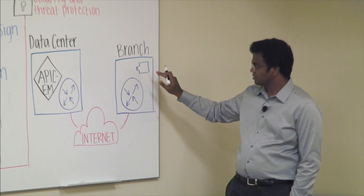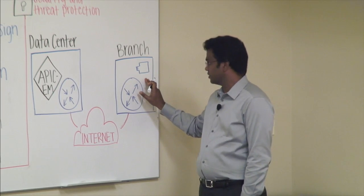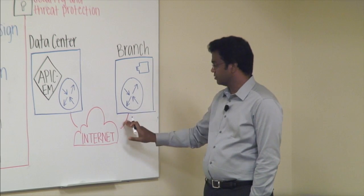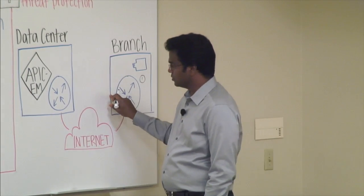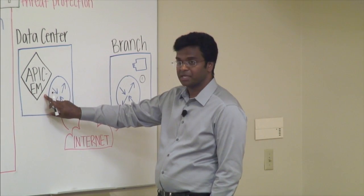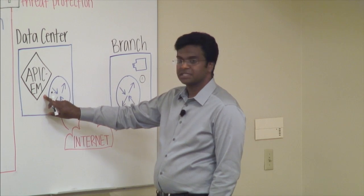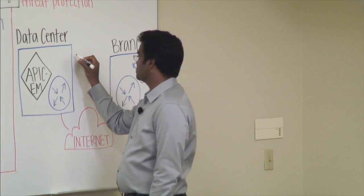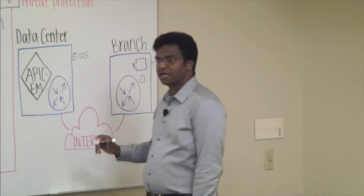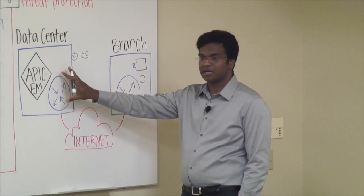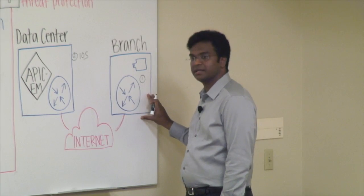So the way how it works is, step one, you connect your USB with the right call home address. You plug in your Ethernet and you power it on. So once you do that, we make a connection to our Epic EM controller. So the first thing that we do is, step two, is we check the iOS version. If you are not having the right iOS version, we will push the right iOS version from the Epic EM to the branch site.